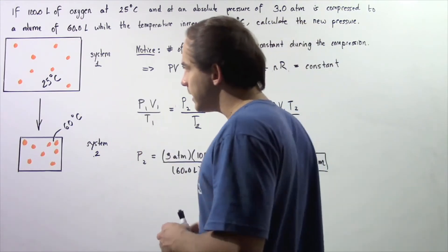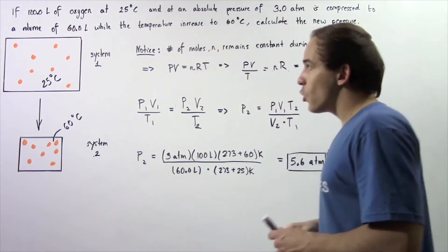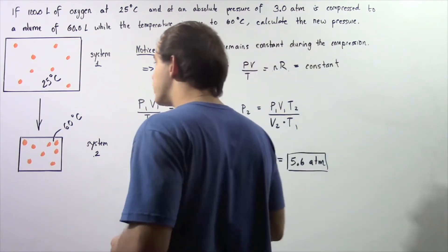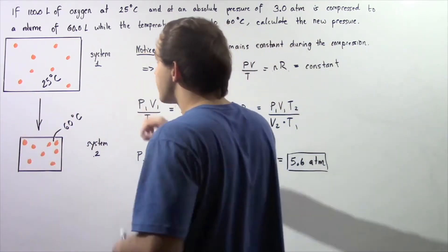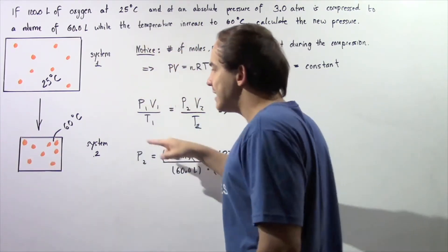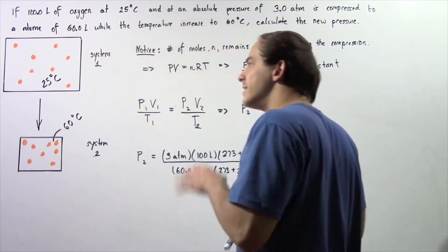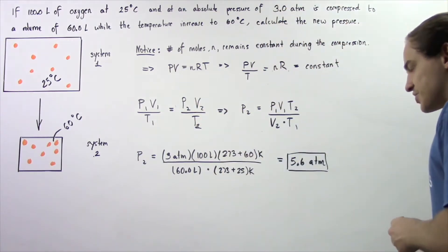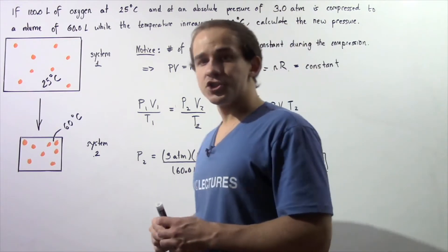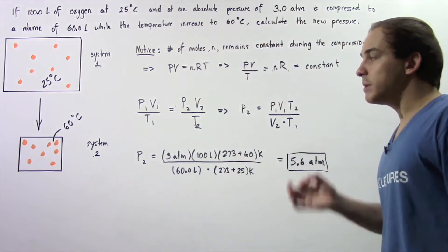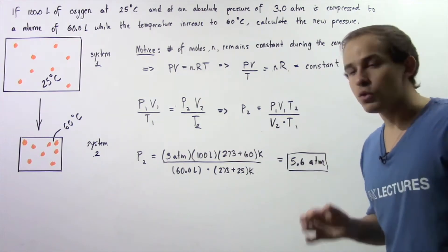Let's begin by looking at our two diagrams. We have system number one that is at 25 degrees Celsius with 100 liters, compressed to system number two with 60 liters and an increase in temperature to 60 degrees Celsius. So what is the new pressure of our system? Well the pressure has to increase, but what exactly is the value?